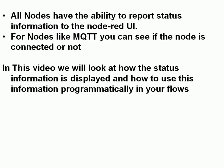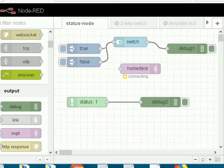We're going to look at things like the MQTT node and how we can use the status information — like is the node connected, is MQTT connected or is it disconnected — and use that to make decisions on whether we publish information or not. Here is my test flow: I've got two inject nodes leading into a switch node which goes to a debug node.